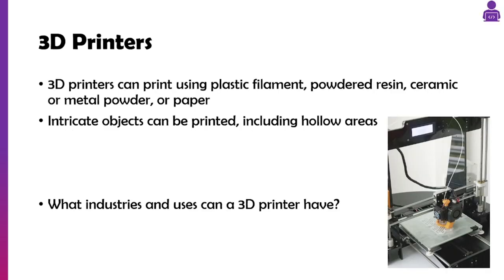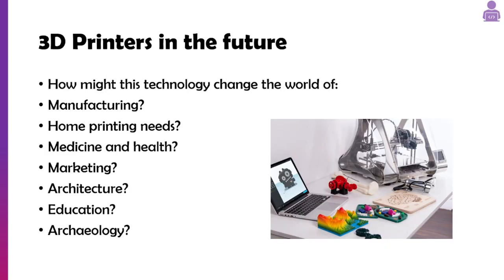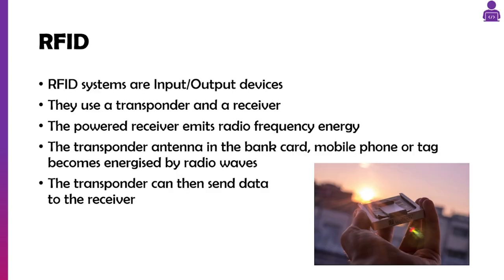3D printers use plastic filament or powdered resin to create a 3D object. People print figures, models, and there's a whole industry around them. Think about what industries might use a 3D printer and how the technology could develop — could it allow us to manufacture bones, produce medicine, or even print specific vitamins? It could be used in marketing to show what a product will look like, or in education to print a model of a hard drive.